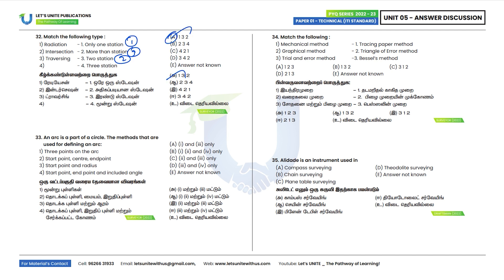Thirty-third question: An arc is a part of a circle. Which methods are used for defining an arc? A start point, center point, and end point — correct; start point and radius — one point is correct; start point, end point, and included angle — also correct. Options 1, 2, and 4 are correct. Option B is the correct answer.